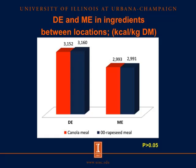For digestible energy and metabolizable energy in canola meal and rapeseed meal from different locations — again, orange represents canola meal from North America and blue represents double-zero rapeseed meal from Europe — digestible energy in canola meal and double-zero rapeseed meal were 3,152 and 3,160 kcal/kg, respectively. Metabolizable energy were 2,993 and 2,991 kcal/kg, respectively. The concentrations of digestible energy and metabolizable energy were not different between the two locations.